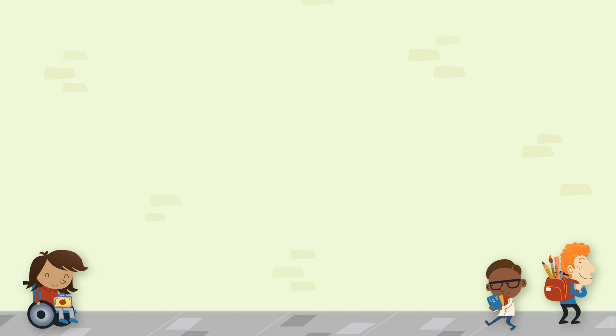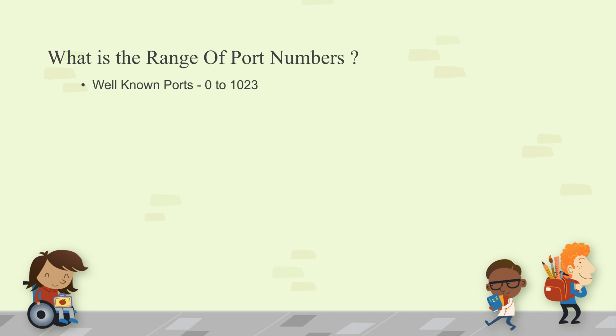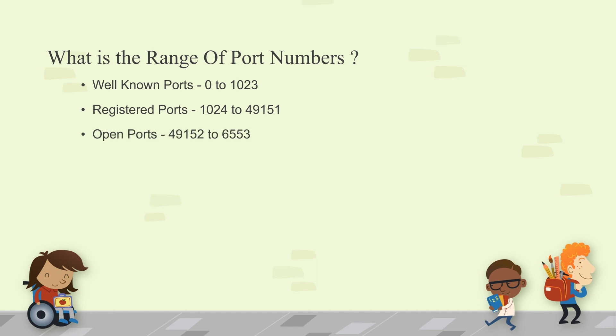Other common port numbers: BGP uses 179, HTTPS uses 443. We cannot remember all port numbers, but we need to keep the basic ones in mind. The well-known ports range from 0 to 1023, registered ports from 1024 to 49151, and dynamic or open ports from 49152 to 65535.